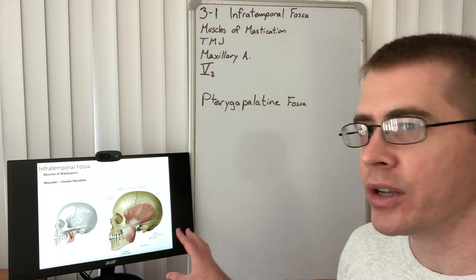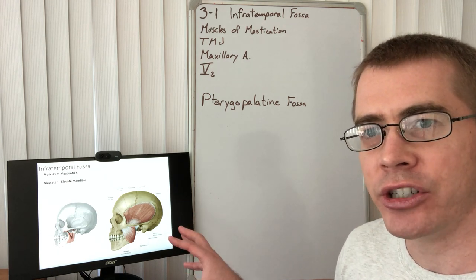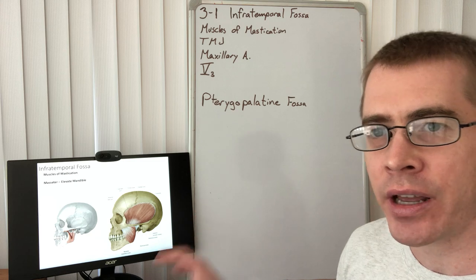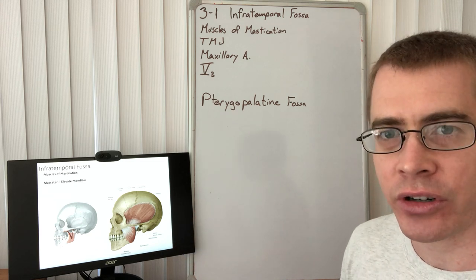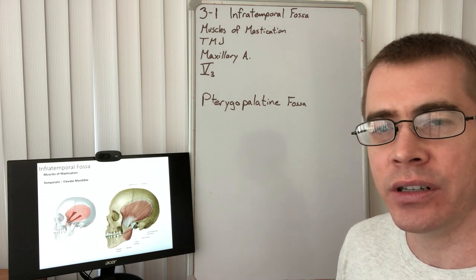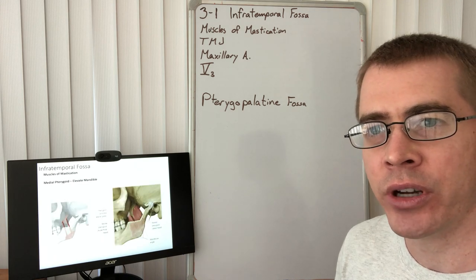The infratemporal fossa is mainly related to mastication. It contains the TMJ and the muscles of mastication. Here in these few slides we can see these muscles of mastication and their attachment points.